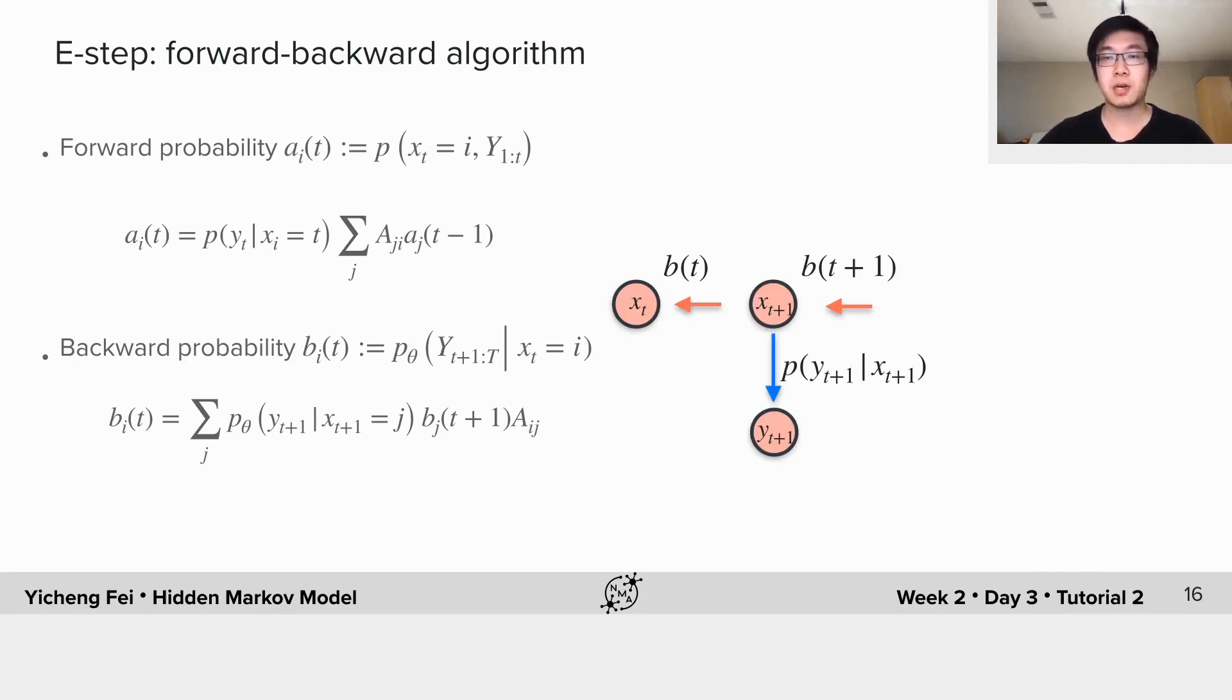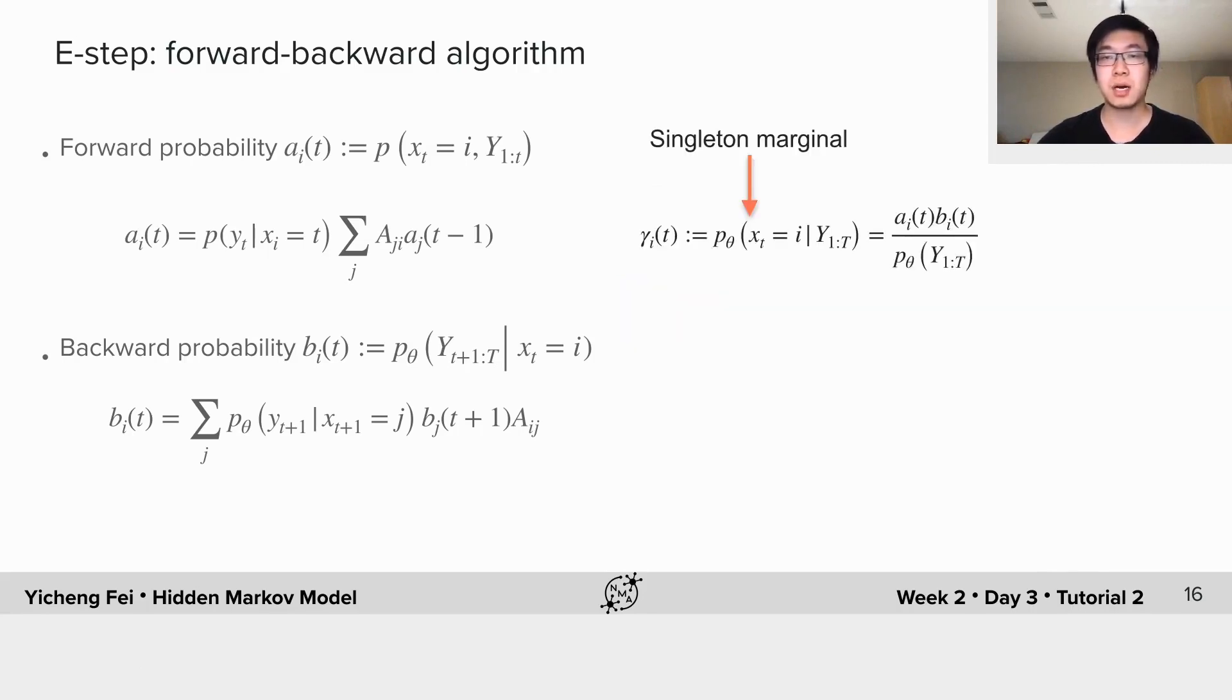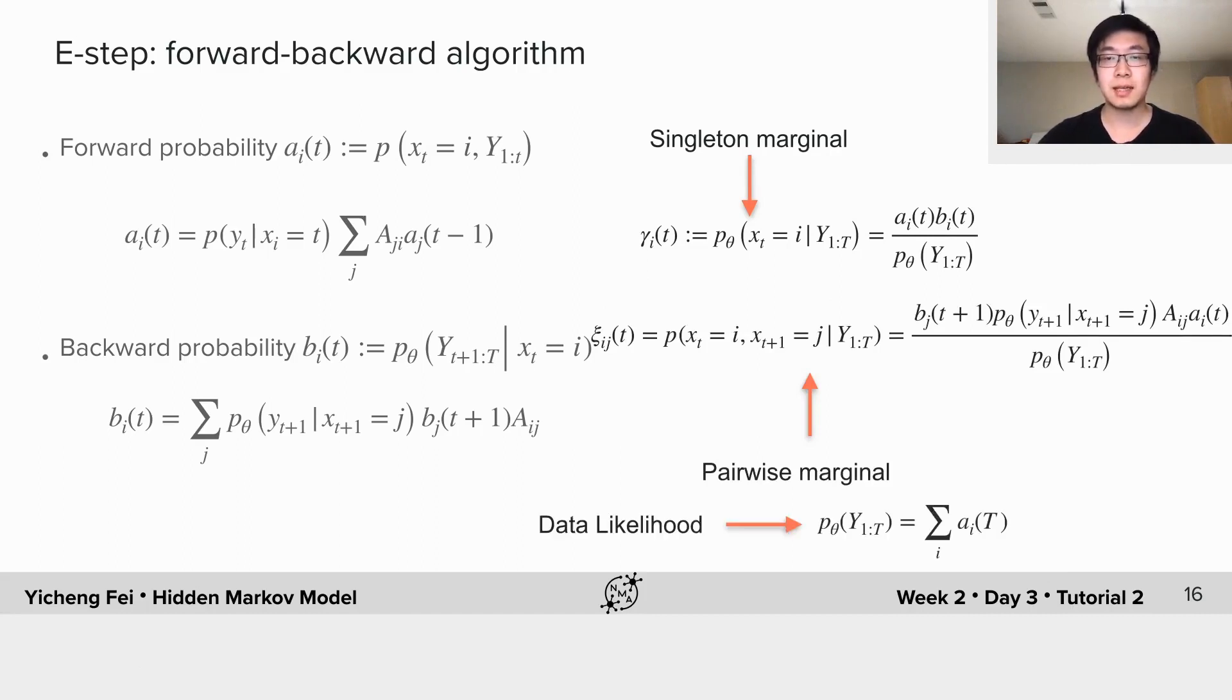So combining future, current and past data, we are able to calculate the singleton marginal probability of x_t given all data, which is γ, and the pairwise marginal probability of adjacent states ξ, with forward and backward probabilities. The data likelihood is given by the summation of forward probabilities in all states after seeing all the data, which is kind of intuitive.